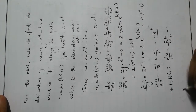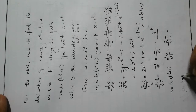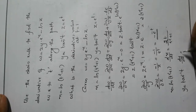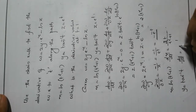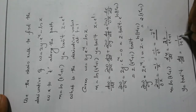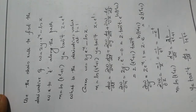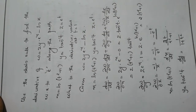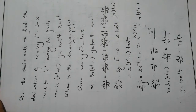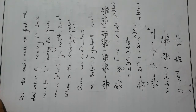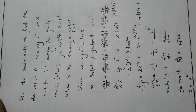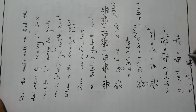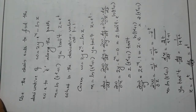So y = tan⁻¹(t), and the derivative of tan⁻¹(t) is 1/(1 + t²). For z = e^t, dz/dt = e^t.